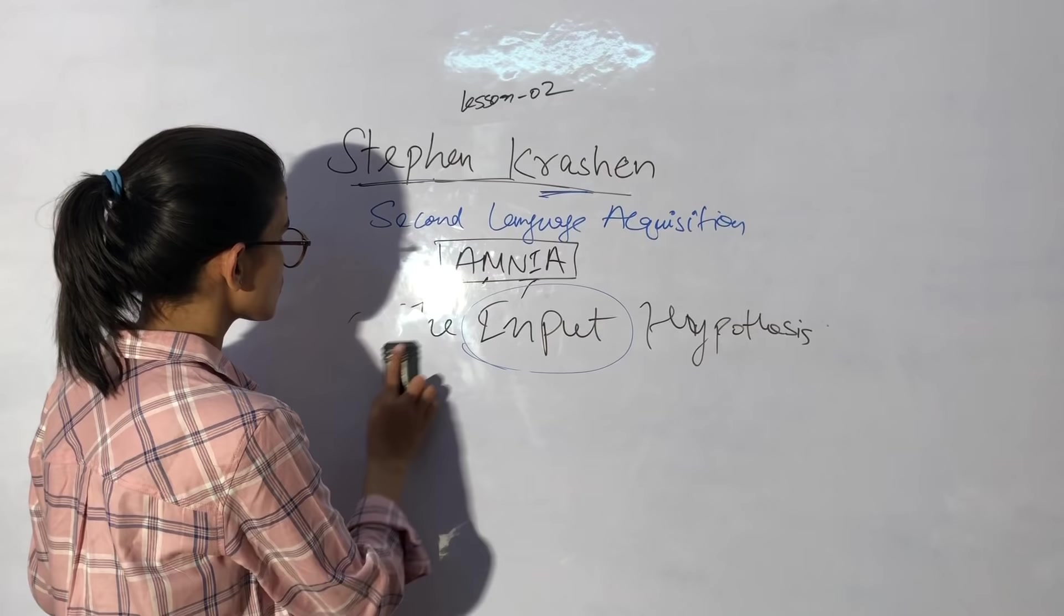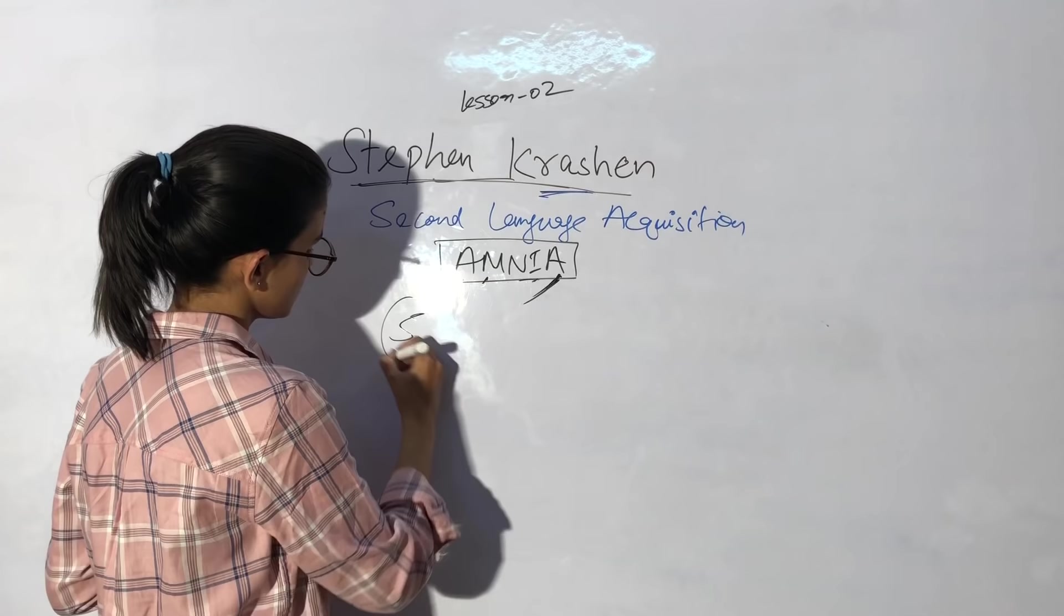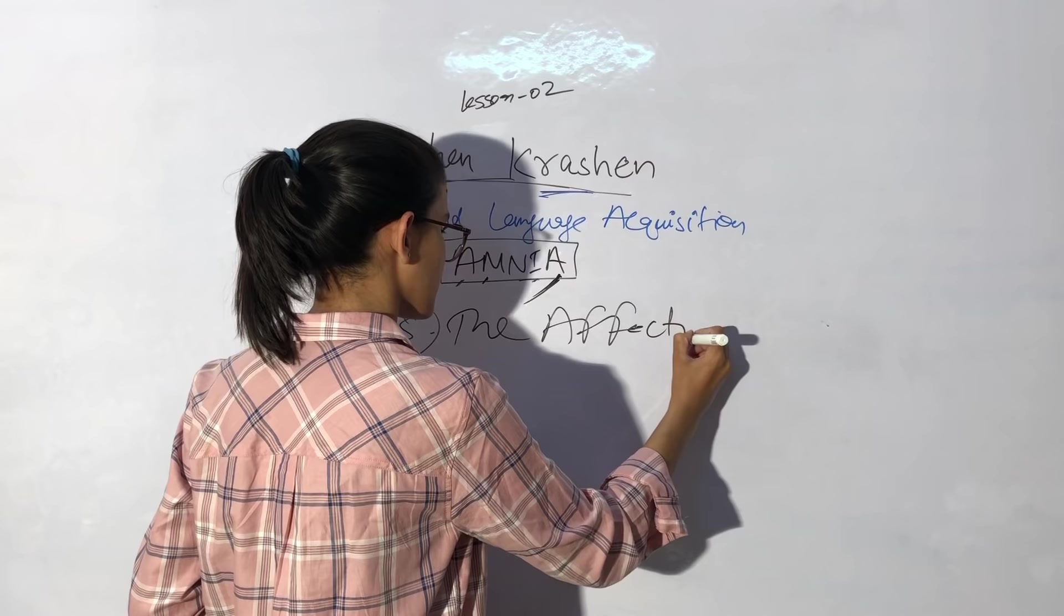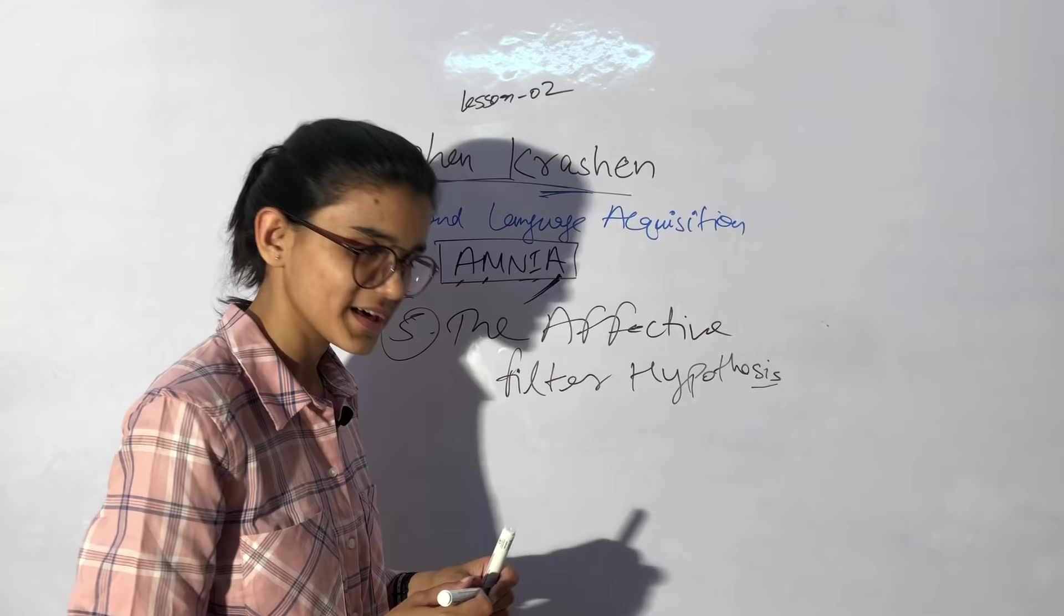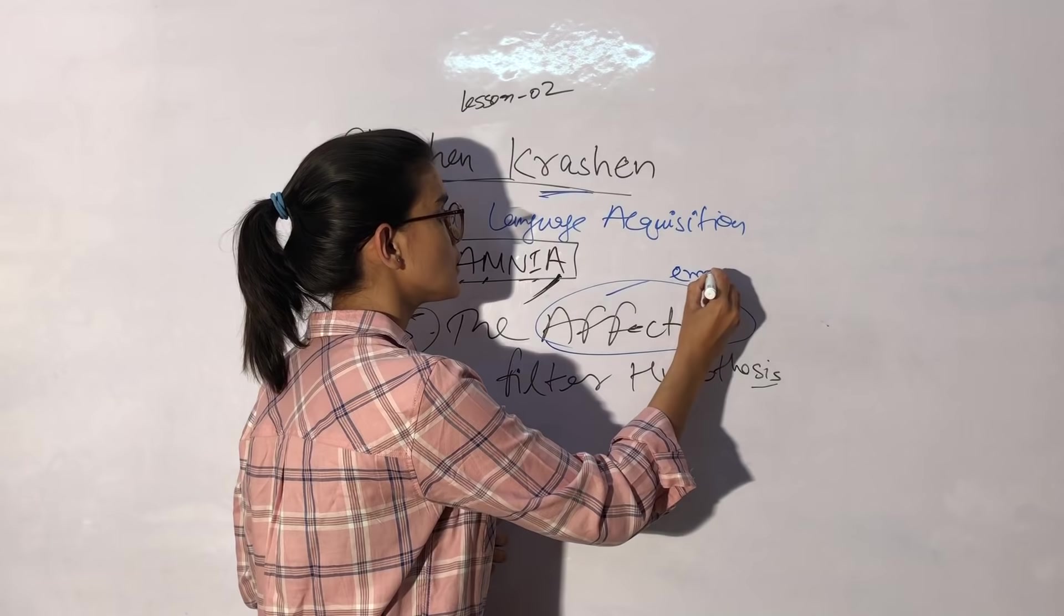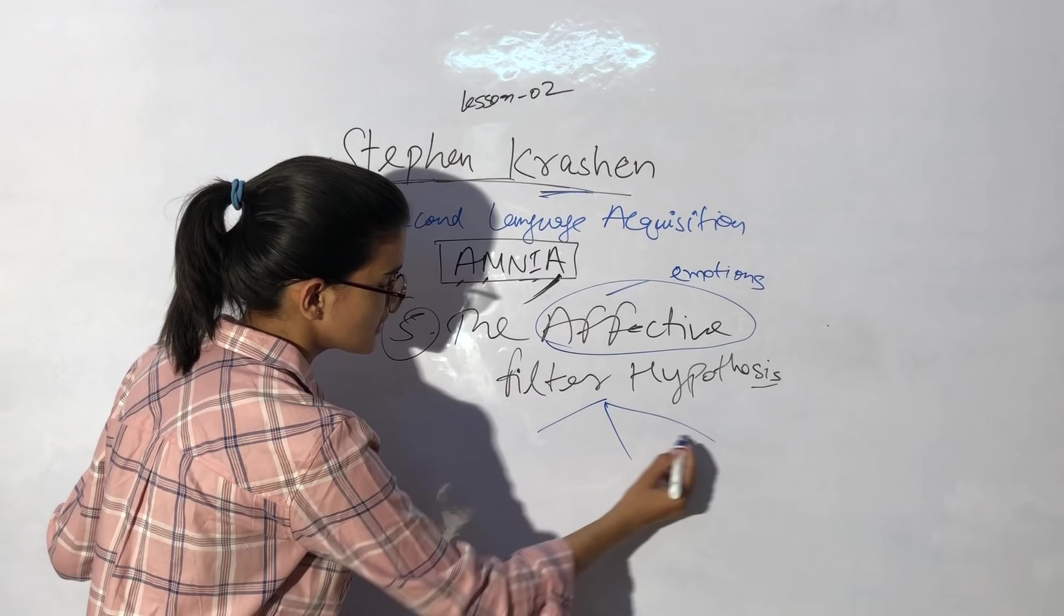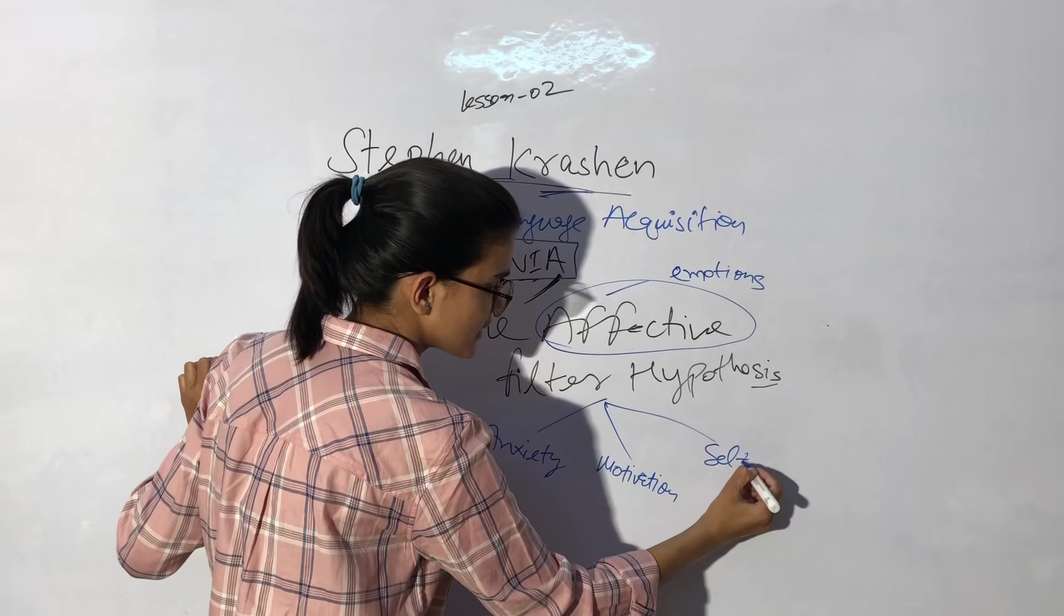The last one is the affective filter hypothesis. The 5th one is the most important one. If we talk about this, you will have heard the affective motor domain. If you have studied Bloom's taxonomy, the affective means that which affects us. It is related to our emotions. When it is related to emotions, there will be three things. The first one will be the anxiety level, the second one is motivation, and the third one is self-confidence or self-esteem.